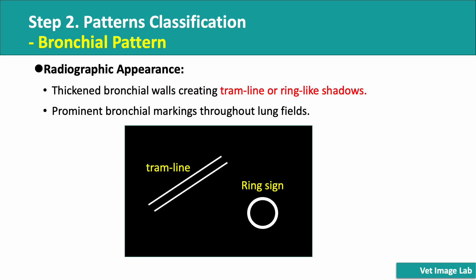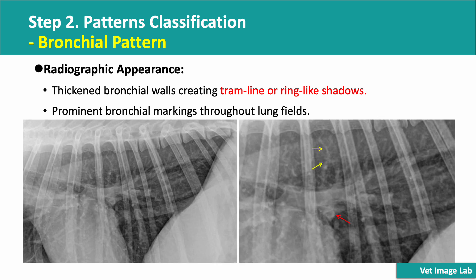Let's take a look at bronchial patterns and how they appear on radiographs. In this pattern, we see thickened bronchial walls, which form distinct tramline or ring-like shadows on X-rays. These changes occur when the bronchial walls become inflamed, accumulate mucus, or undergo mineralization over time. One of the key characteristics of the bronchial pattern is the prominent visibility of bronchial markings throughout the lung fields. These changes indicate bronchial disease, where inflammation or mucus accumulation causes the bronchi to become more prominent on X-rays.